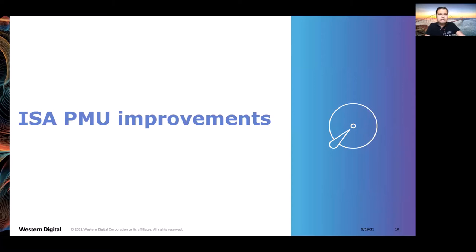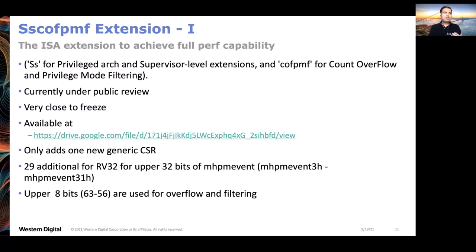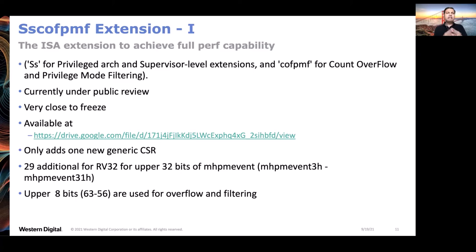Let's take a look at the ISA improvements, starting with the Sscofpmf extension. The abbreviation may be tough to pronounce, but there's a reason for it - it was not abbreviated randomly. SS stands for the privileged ARC supervisor level extension, COF stands for counter overflow, and PMF stands for privileged mode filtering. Since RISC-V is extensible with many extensions, we need proper qualified naming so that by just reading the extension name we can understand what it means.